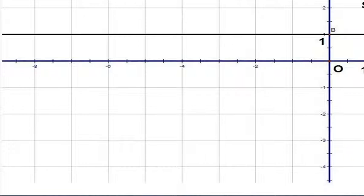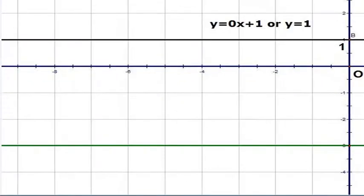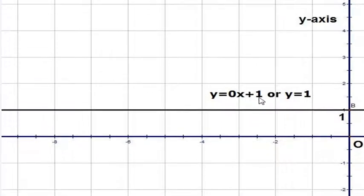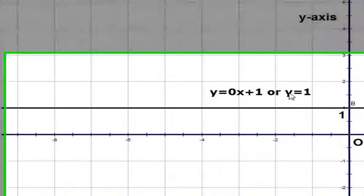Because there is no rise at all, and you can see that the y-intercept is (0,1), the equation of the line would be y equals 0x plus 1, or y equals 1.